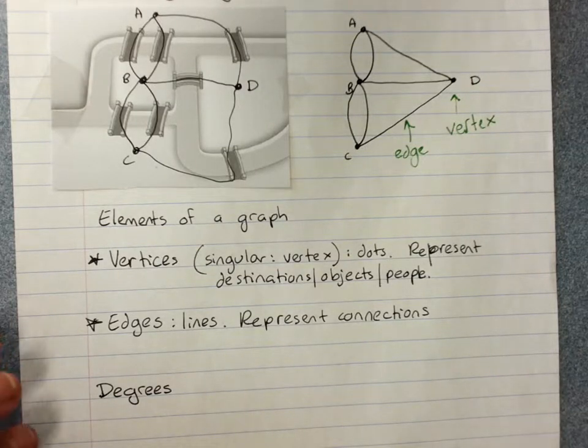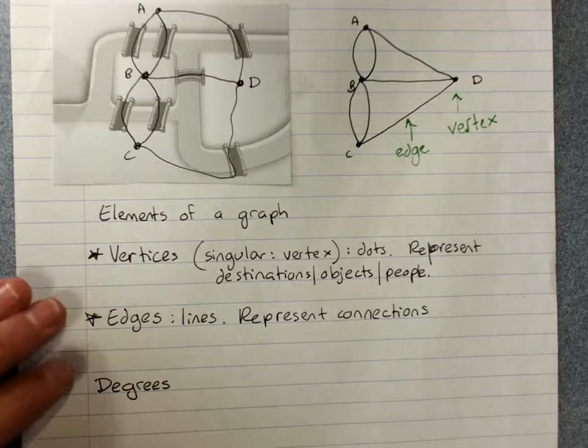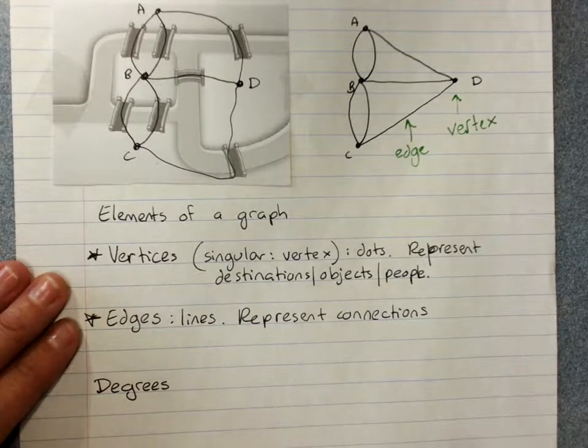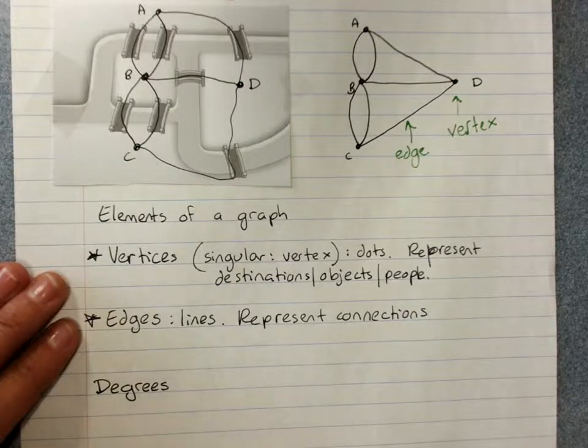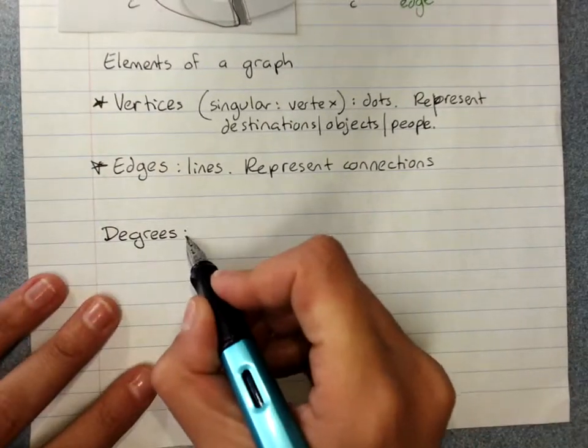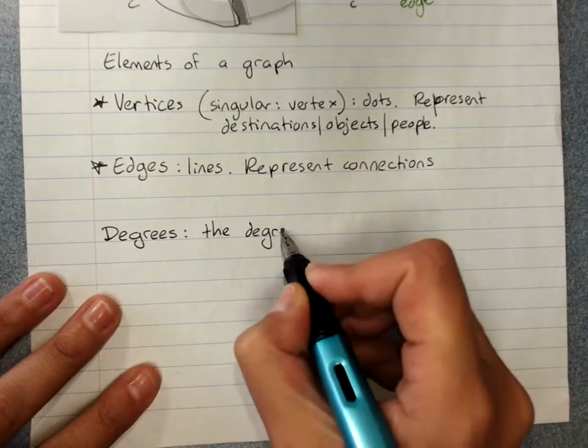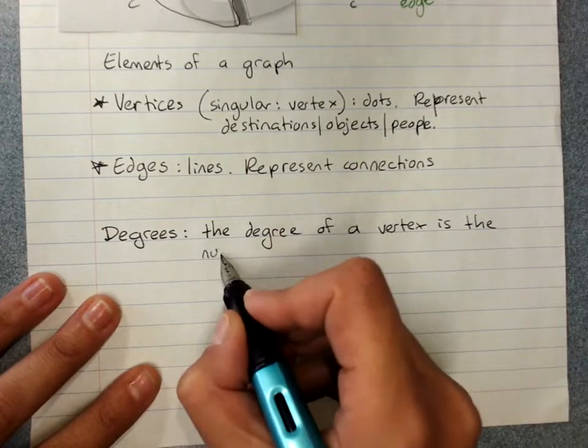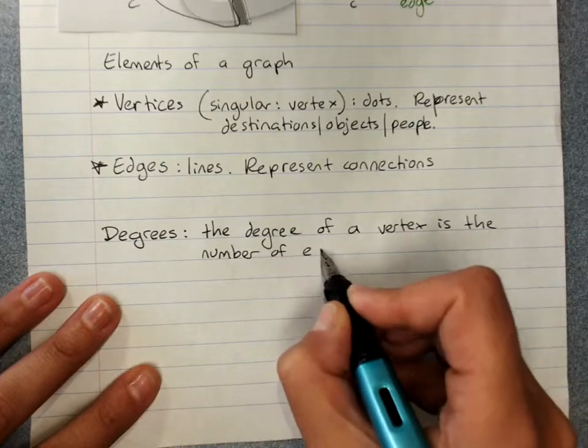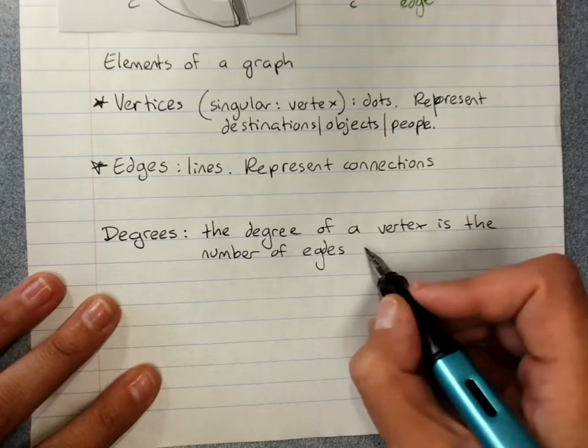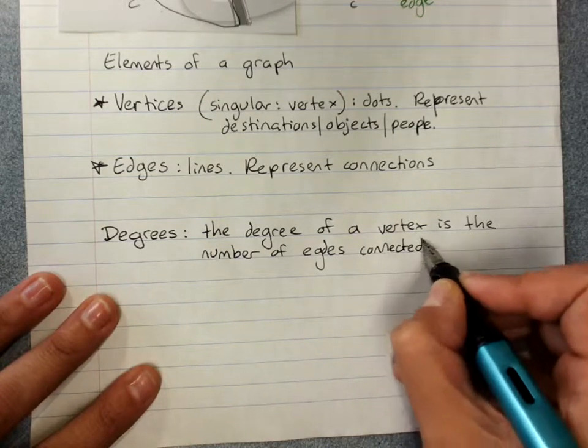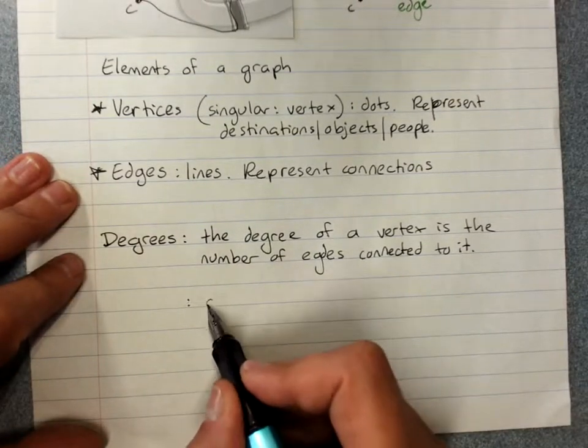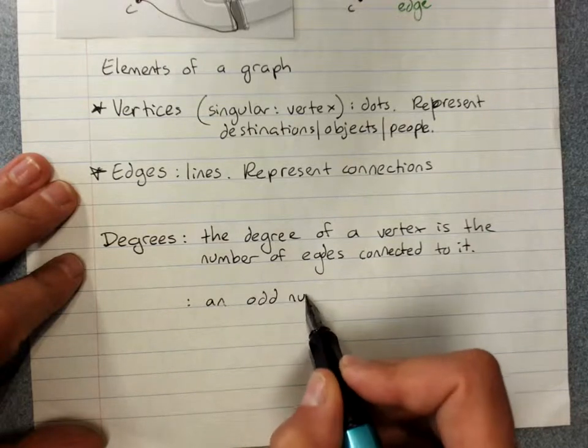Now the other aspect of graphs that we have to look at today is Euler found that the solution to the Konigsberg bridge problem, which is in fact that there was no solution, you can't do it, is based on what he called the degree of a vertex. And the degree of a vertex is the number of edges connected to it. An odd number of edges gives an odd degree.